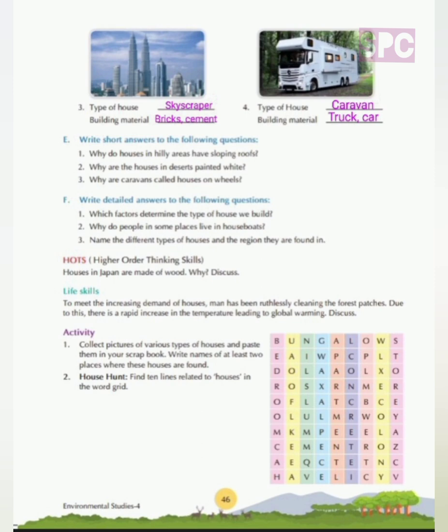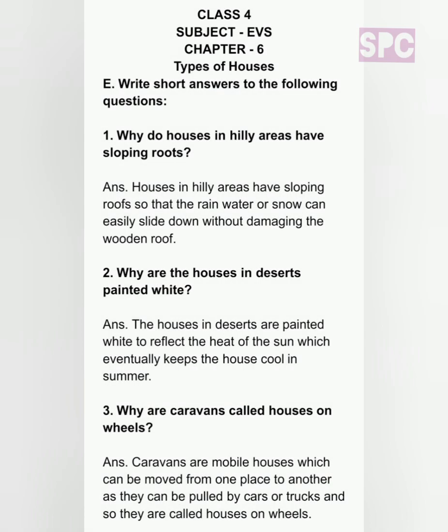Question E: Short answers. Question 1: Why do houses in hilly areas have sloping roofs? Houses in hilly areas have sloping roofs so that rain water and snow can easily slide down without damaging the wooden roof. Question 2: Why are the houses in deserts painted white? The houses in deserts are painted white to reflect the heat of the sun, which keeps the house cool in summer. Light color reflects heat while dark colors like brown and black absorb heat. Question 3: Why are caravans called houses on wheels? Caravans are mobile houses which can be moved from one place to another as they can be pulled by cars or trucks, so they are called houses on wheels.